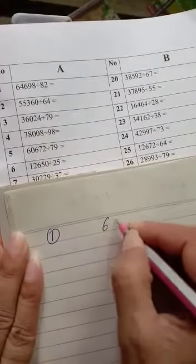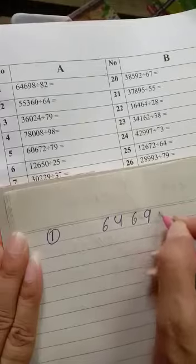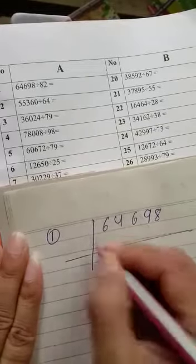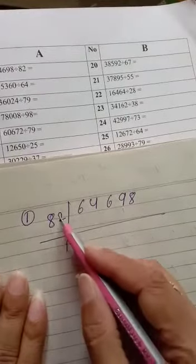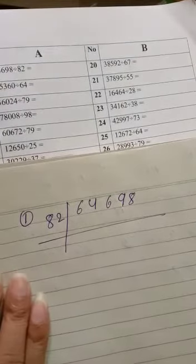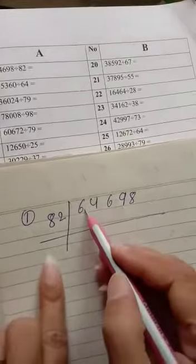It is 64,698 divided by 82. This one is the divider, this one is multiply. So we have to take one time. First is 64.